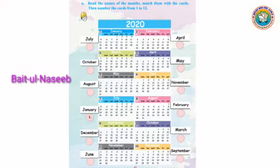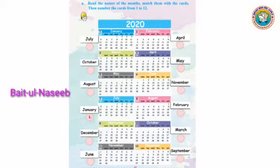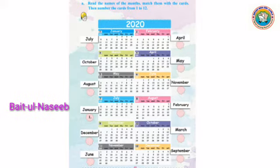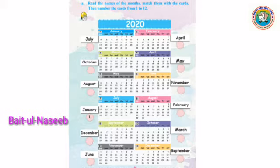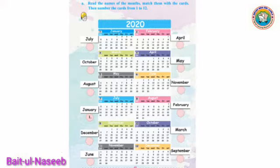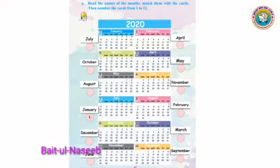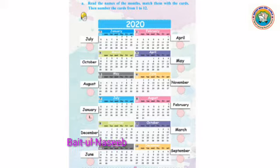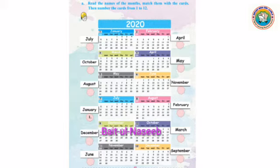अब बेटा देखिए, यहाँ पर कुछ calendar means — वो होता है बेटा, जिससे हमें दिन और महीनों का पता चलता है. आपको यहाँ पर एक calendar का, पूरे साल भर के calendar की तस्वीर दी गई है.